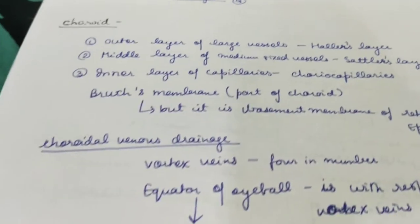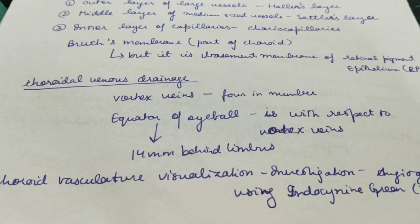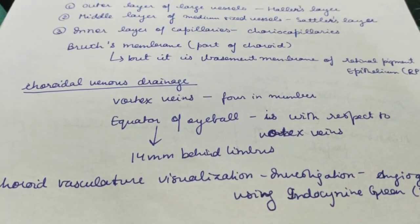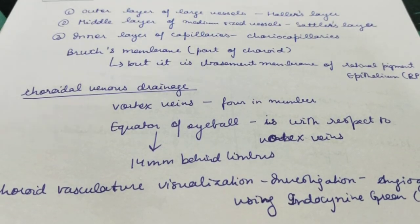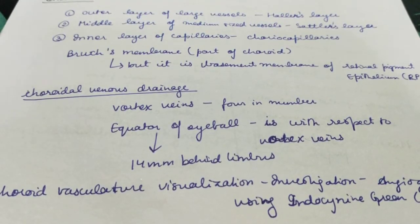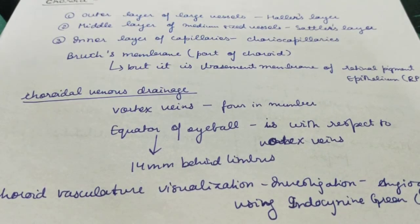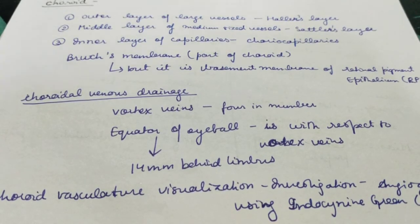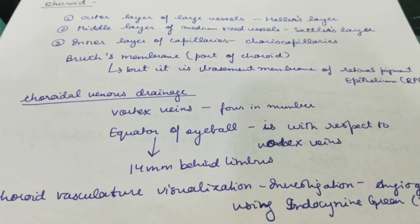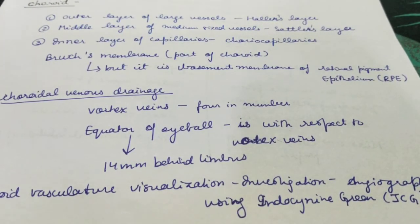The choroidal venous drainage occurs via the vortex veins, which drain the choroid. These vortex veins are located at the equator of the eyeball, approximately 4 mm behind the limbus. To visualize choroidal vasculature, angiography is performed. This concludes the anatomy of the uvea.